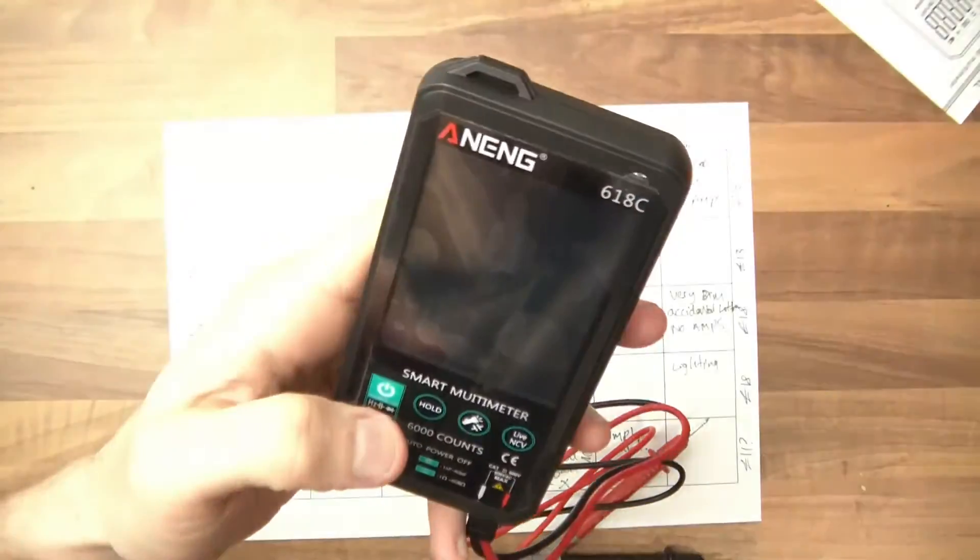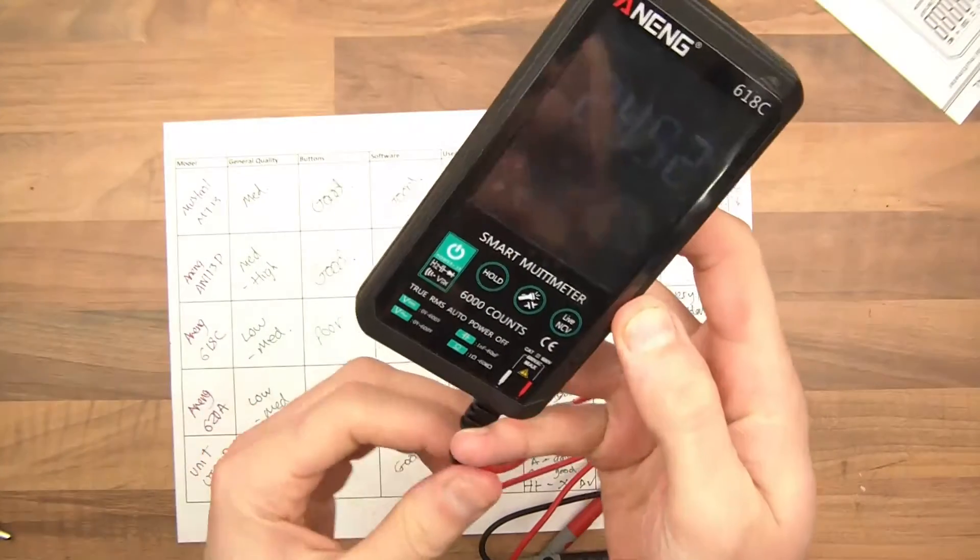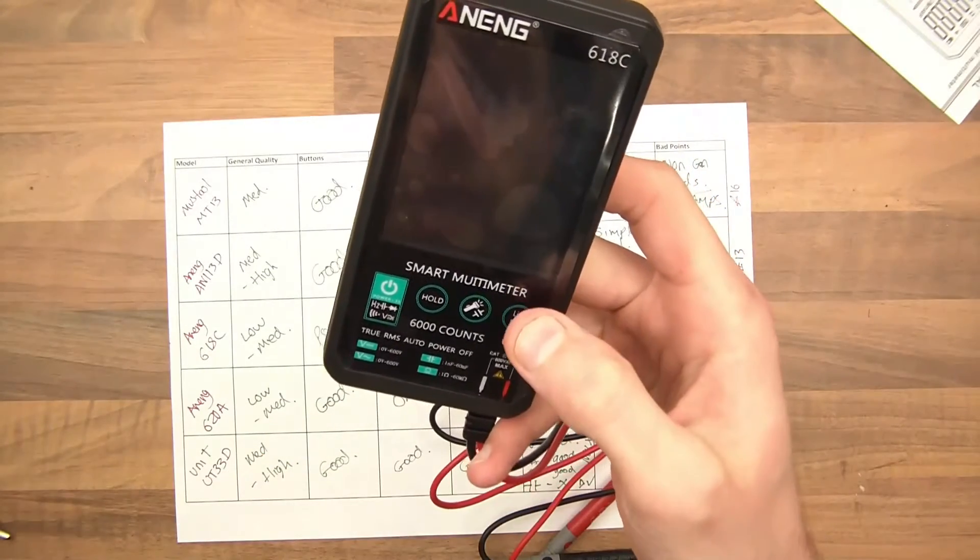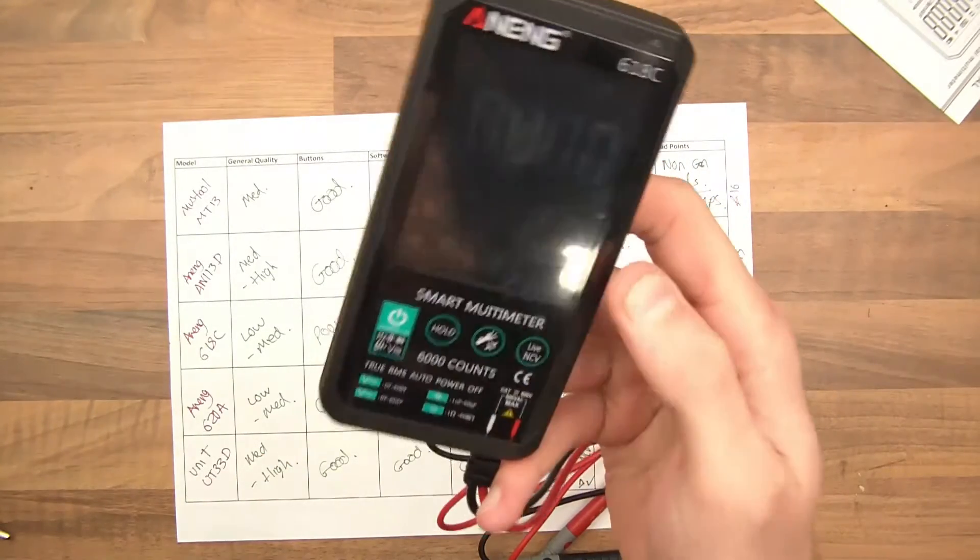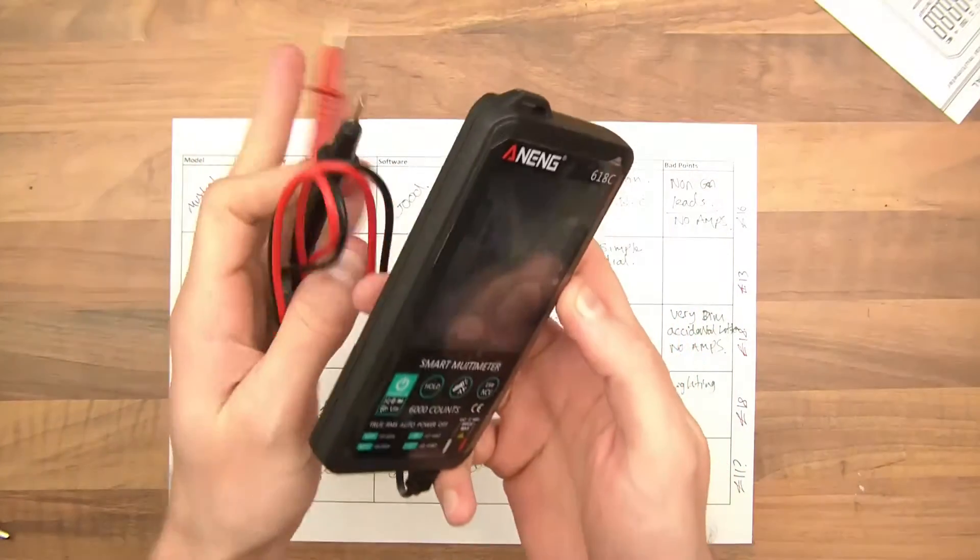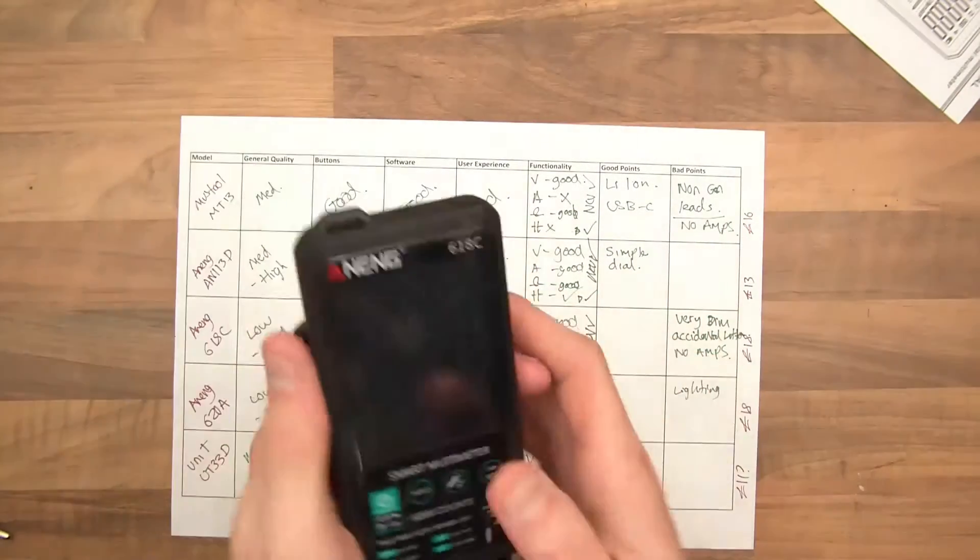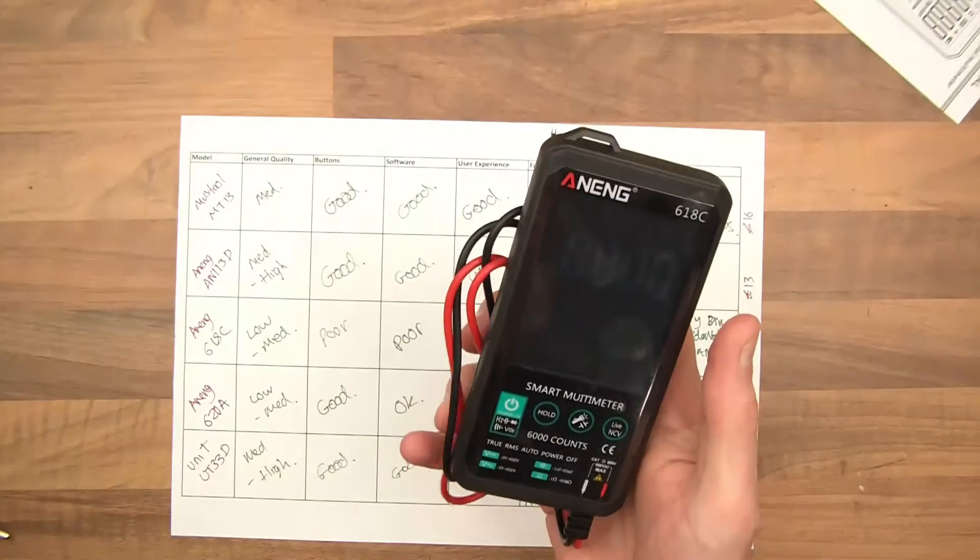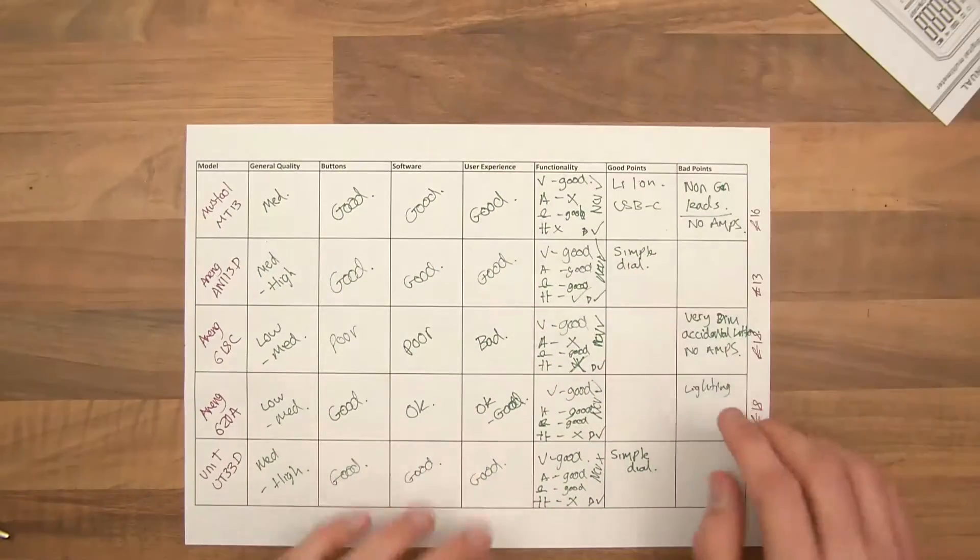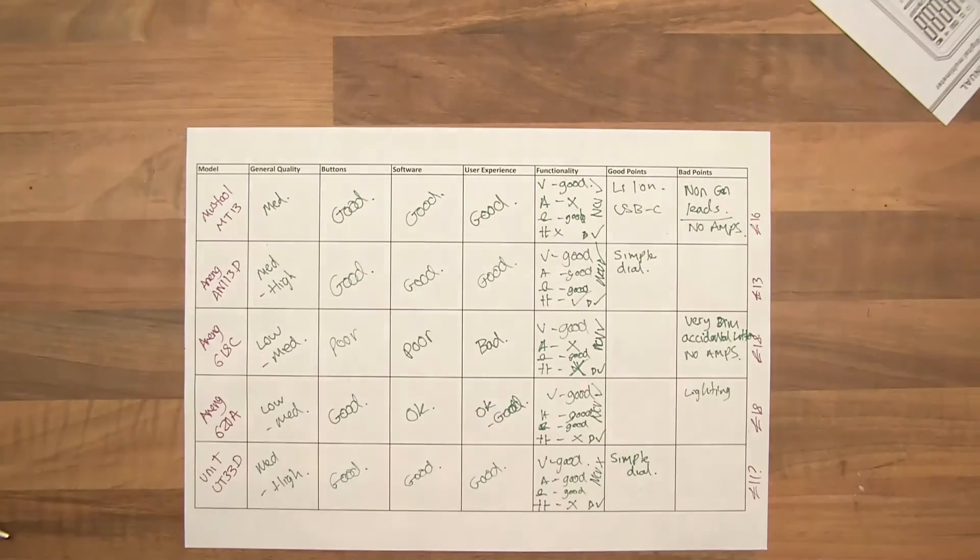Maybe if you got used to it, it probably would be okay. You know, if you started using it every day. But yeah, the menus don't really make much sense. The live NCV and the rest of it do work. Capacitance doesn't work on this. And again, very, very importantly, like the other one, there's no amperage. There's no amperage, so you can't measure amps, which is a big no-no straight away. So unfortunately, I can't recommend that one either. That one's £18, so I definitely wouldn't get that for £18.